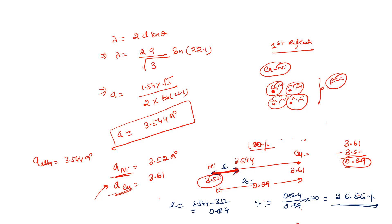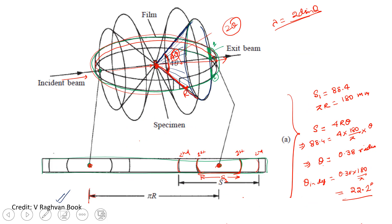So the percentage of copper in the alloy is approximately 26.67%. The answer may vary slightly depending on the exact lattice parameter values used for nickel and copper. In a GATE exam, these values will be provided in the question, so you can calculate easily. The method and concept are the same. Thank you all — hope this helps with your GATE preparation.